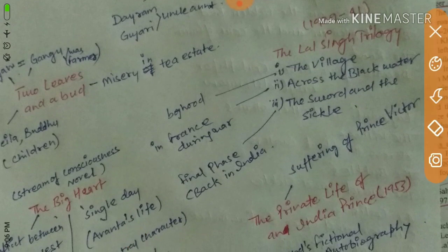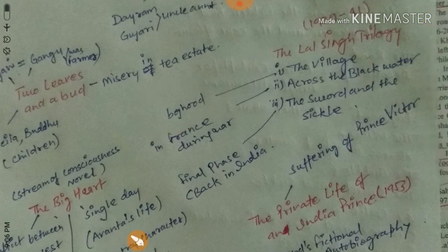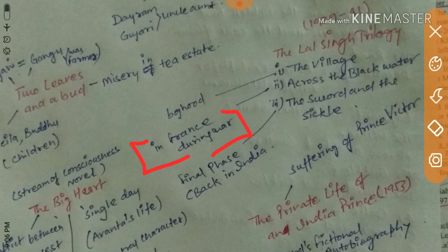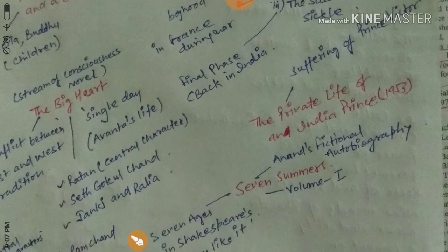The Lal Singh Trilogy is a famous account of Lal Singh's life. The first novel in the series presents Lal Singh's boyhood in the village. The second, Across the Black Water, depicts his time in France during the war. The third, The Sword and the Sickle, covers the final phase of Lal Singh's life back in India.